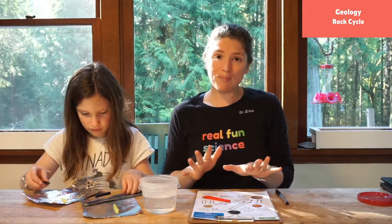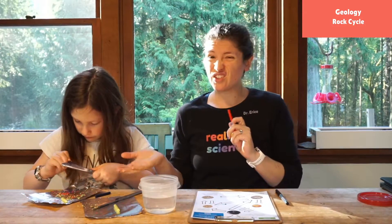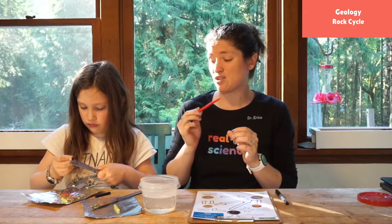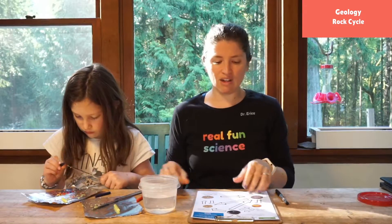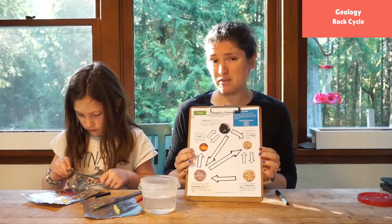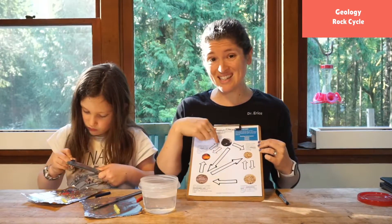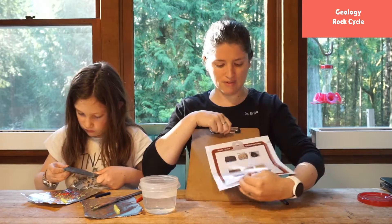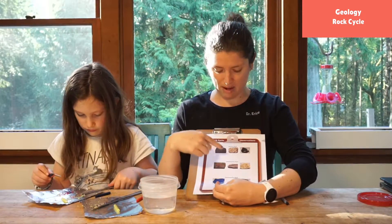For the project today you need some crayons and a butter knife—you'll notice Georgia is scraping our crayons down, so use crayons you don't care about. You also need a little piece of foil and some hot water. Our patrons have our fabulous rock cycle printout, which has the rock cycle we'll fill in together and some different types of rocks we're going to learn about.